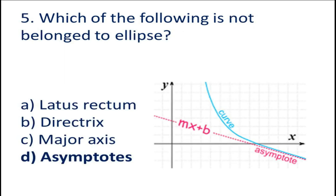Question number 5: Which of the following does not belong to an ellipse? A. Latus rectum, B. Directrix, C. Major axis, D. (option not completed).